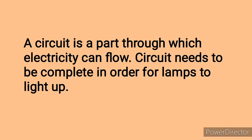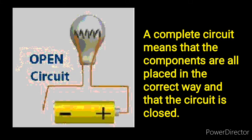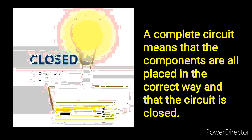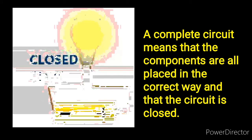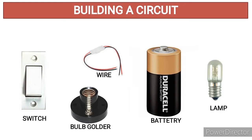We moved to circuits. A circuit is a path through which electricity can flow, and circuits need to be complete in order for lamps to light up. We looked at open and closed circuits: when a circuit is closed the bulb lights up; when it is open the bulb goes off. A complete circuit means all components are placed correctly and the circuit is closed. The components needed are a switch, bulb holder, battery, wire, and lamp.